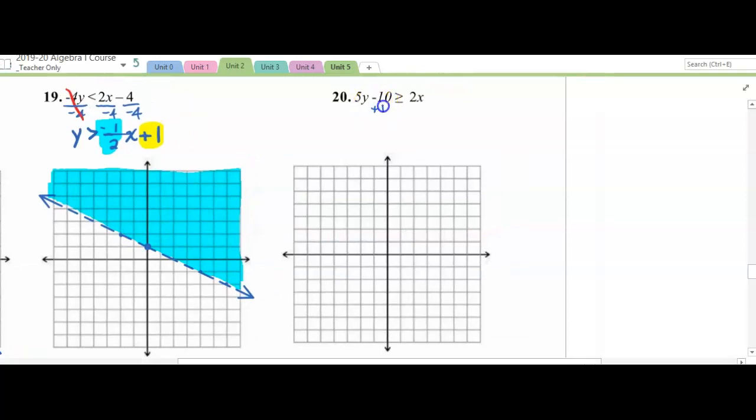Again, we need to get y by itself by adding 10 to both sides and dividing by 5 on both sides. When we do that, we get y is greater than or equal to 2 fifths x plus 2. I'm going to begin with b. I'm going to move m up 2 right 5, or down 2 left 5. Connect these points. Next, it's a solid line because it's underlined and I want to shade greater than the line, shade above the line, which would be this region right here.